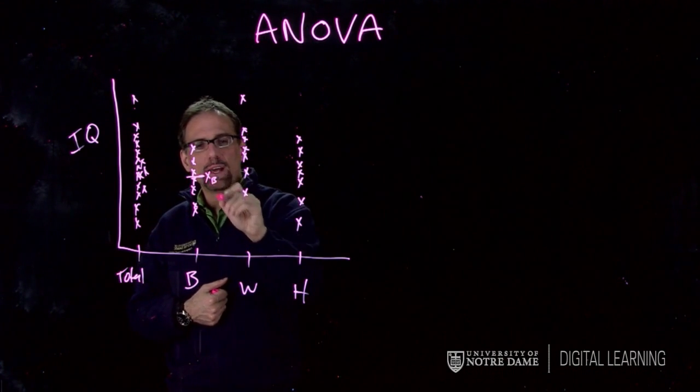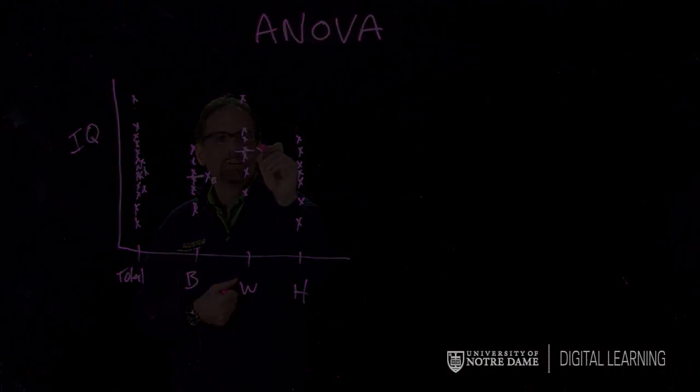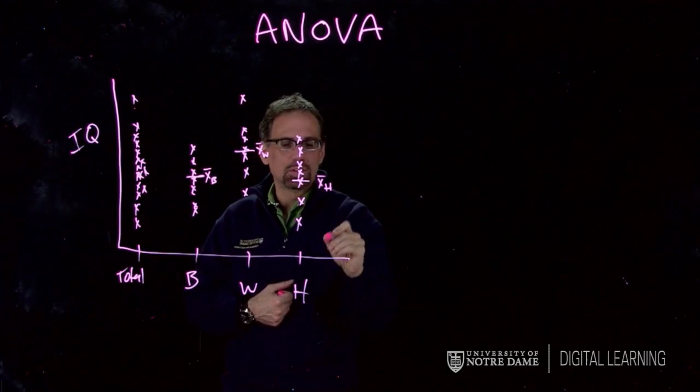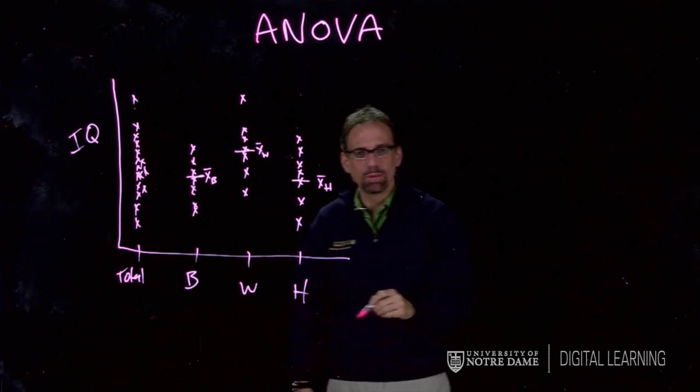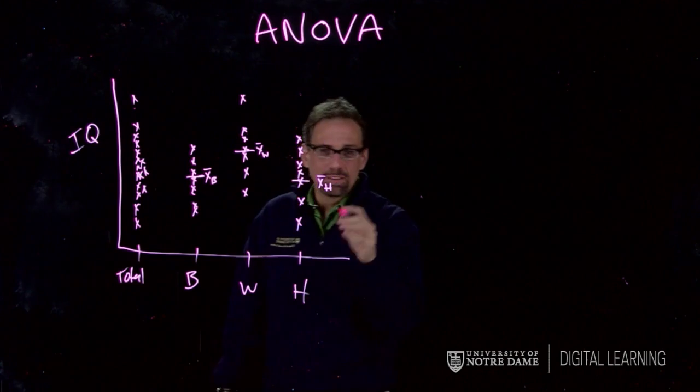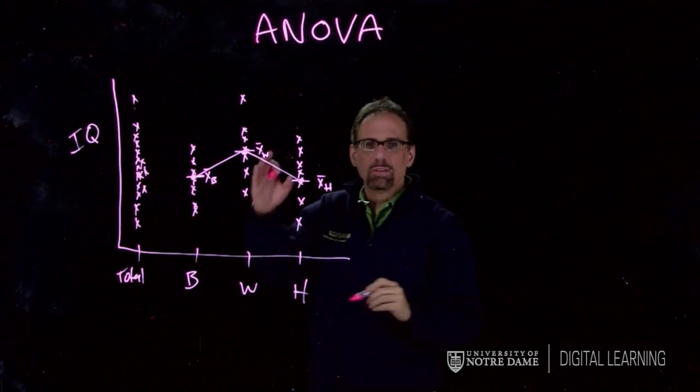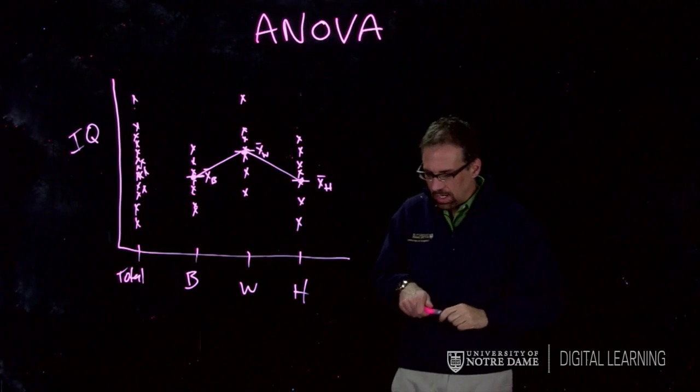There's the mean for Blacks on IQ. Here's the mean for Whites. Now that doesn't mean there are actual intelligence differences between people - those are IQ scores. You've got to remember what you're doing here. IQ is not a direct measure of intelligence. But we can see this kind of relationship between IQ scores.